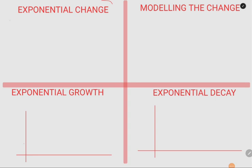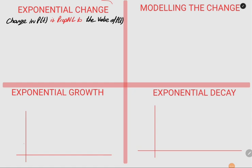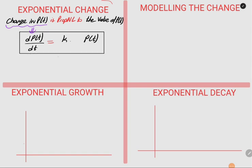In the last video, remember we said that the change in P(t) is proportional to the current value of P(t). The corresponding mathematical writing: change in P(t) is modeled as dP/dt proportional to k times P(t). This was the differential equation.